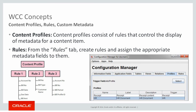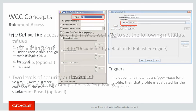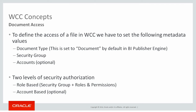A rule controls how the metadata fields will appear on the check-in form, content info, search, etc. — for example, whether they will be an editable field, a required field, or a hidden field. A trigger is used when multiple rules are to be evaluated at a time, when the document matches the trigger value for a profile.